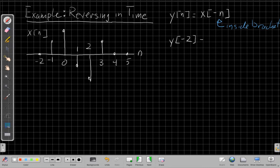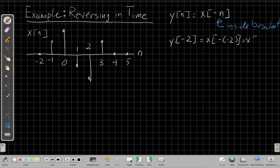So I could say I could set n equal to minus 2, and then I'll get x is equal to minus of minus 2, which is equal to, so y of minus 2 is equal to x of 2.